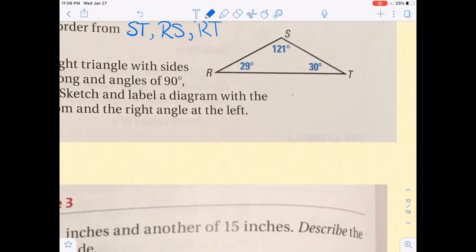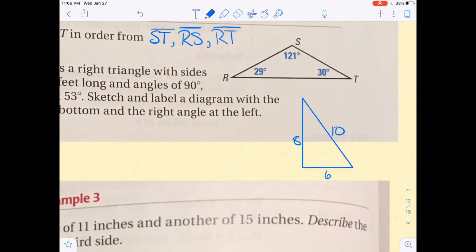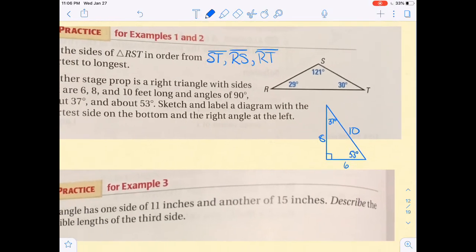So we want to have our right angle over here and our shortest side on the bottom. And we had sides of 6, 8, and 10. And then angles that were about 37 and 53. So the 37 needs to be opposite the 6 because that's going to be our smallest angle. So it's opposite our smallest side. The 53 is opposite the 8 because they're both in the middle. And then the 90 is opposite the 10 because those are the biggest angles and sides.